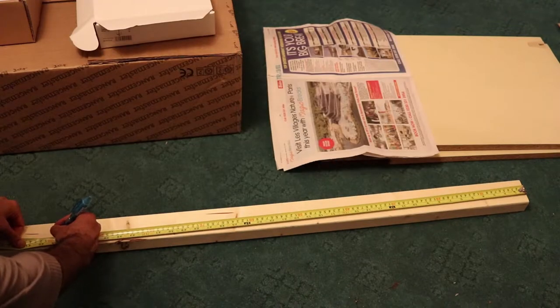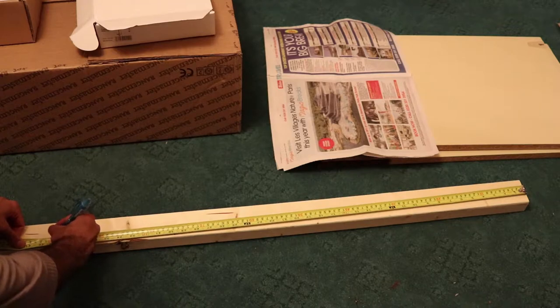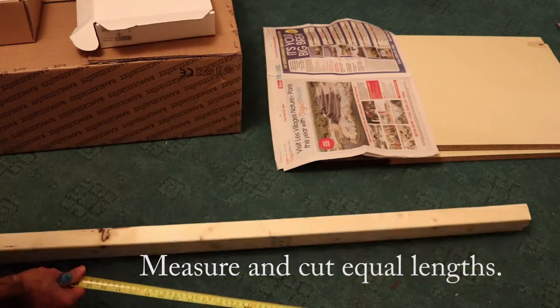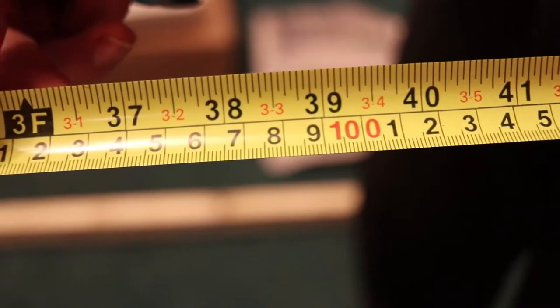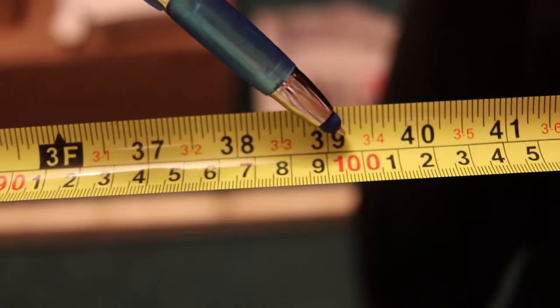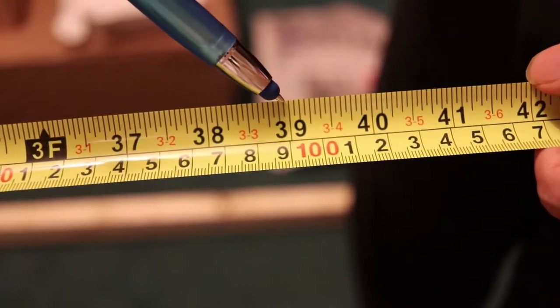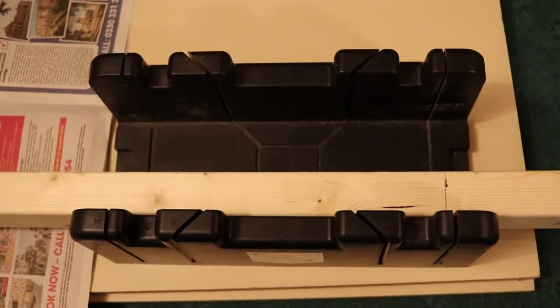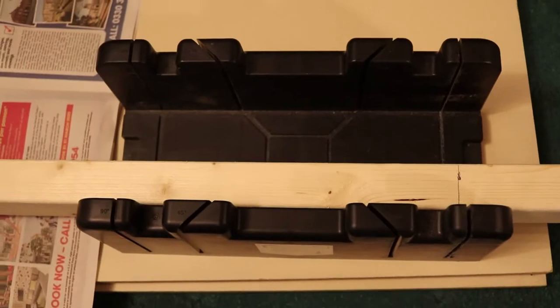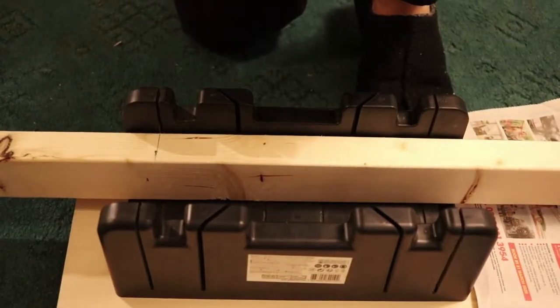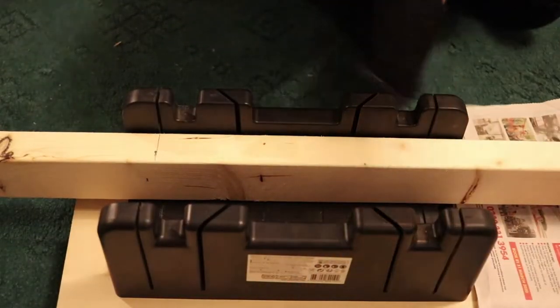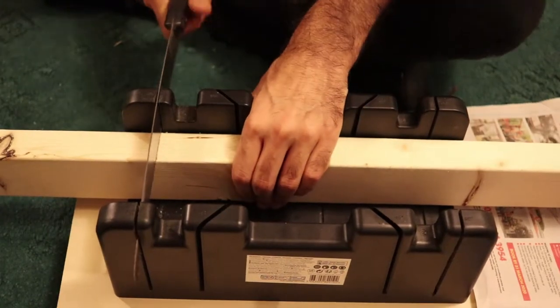So measure it and cut equal lengths. Another thing you need is a mitre block. Place the timber on it. Hold it straight. I am ready to rock and roll.